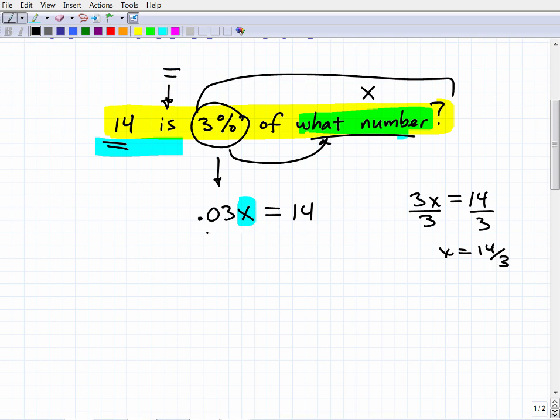So in this case, to solve for X, all I do is divide both sides of this equation by 0.03. OK. So we're going to our handy calculator and then we get mine out. We're going to take 14 and we're going to divide it by 0.03.